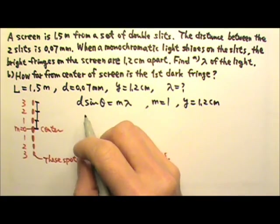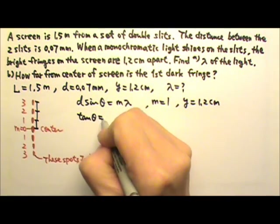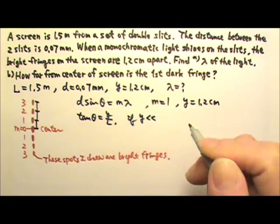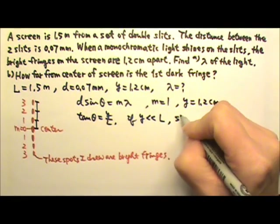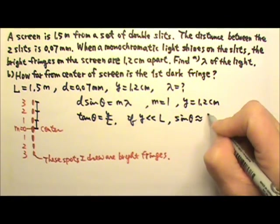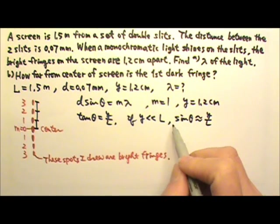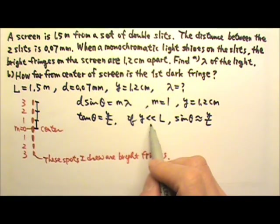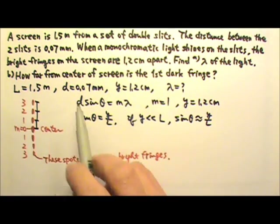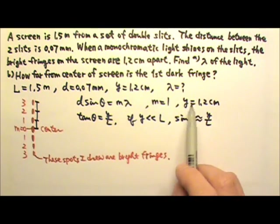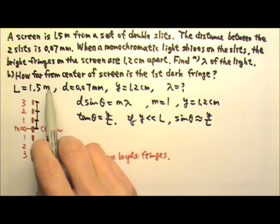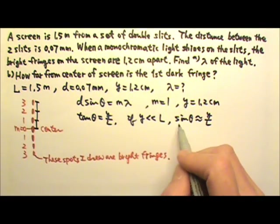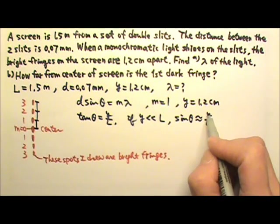Another equation we have is tan theta equals Y over L. However, if Y is much smaller than L, then we can use sine theta is approximately Y over L, which is simpler. Now Y is 1.2 centimeters and L is 1.5 meters, so L is much bigger than Y. Therefore, we can use sine theta equals Y over L.